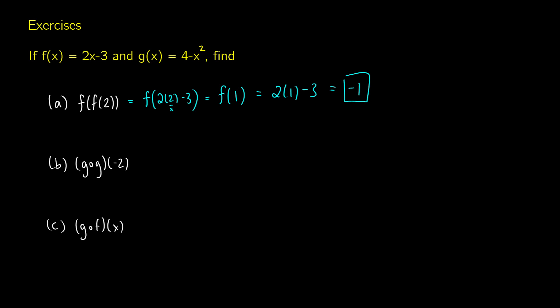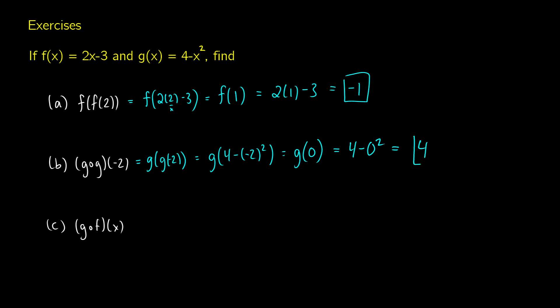Now let's do g of g of negative 2. We first find g of negative 2, which is 4 minus negative 2 squared. That's 4 minus 4, so g of negative 2 equals 0. Now we evaluate g of 0: it's 4 minus 0 squared, which gives us 4.